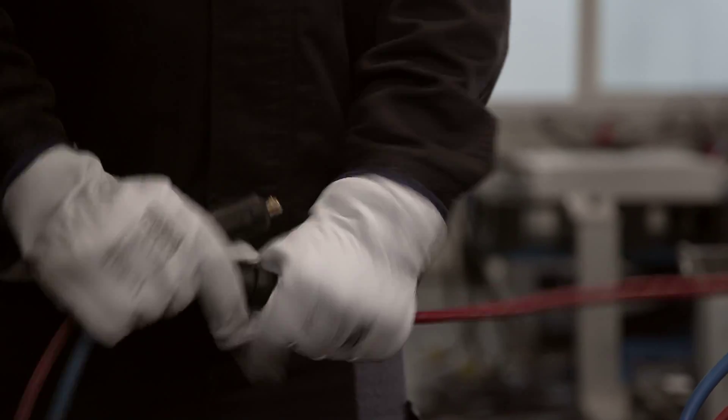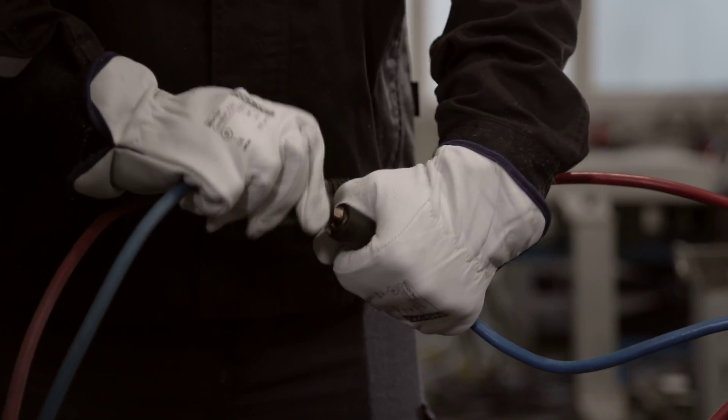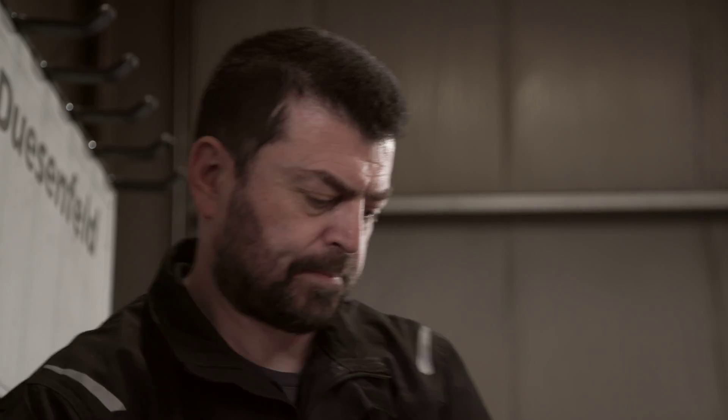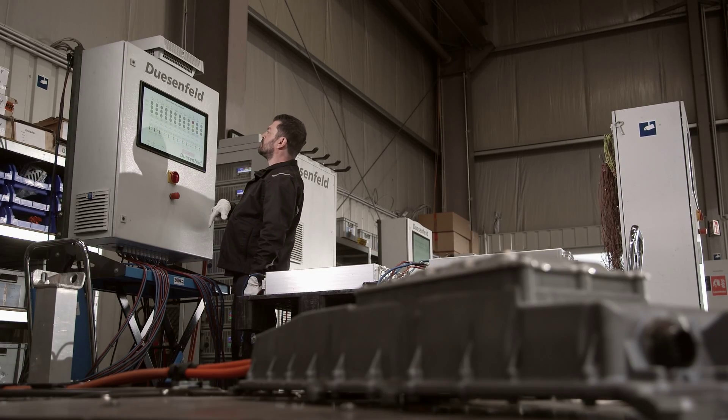In the first step, they are definitively deep discharged. This means that all the electrical energy is taken from the battery and used for operation in the facility. The company has its own discharge station. Here technicians can connect individual cells, modules, and even batteries with a voltage of up to 1,000 volts to the factory's power grid.